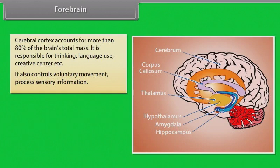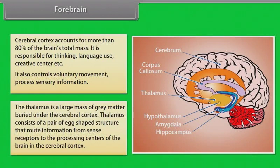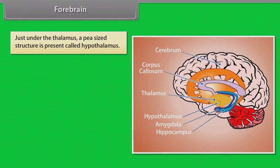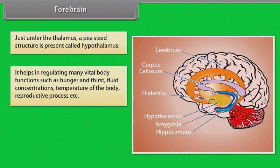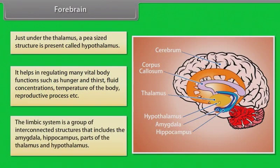The cerebral cortex also controls voluntary movement and processes sensory information. The thalamus is a large mass of grey matter buried under the cerebral cortex, consisting of a pair of egg-shaped structures that route information from sense receptors to the processing centers. Just under the thalamus, a pea-sized structure called the hypothalamus helps regulate vital body functions such as hunger, thirst, fluid concentrations, body temperature, and reproductive processes. The limbic system includes the amygdala, hippocampus, and parts of the thalamus and hypothalamus.